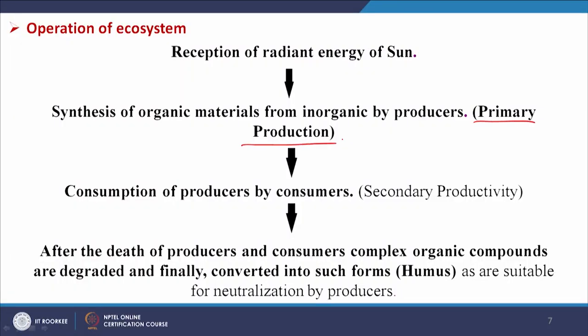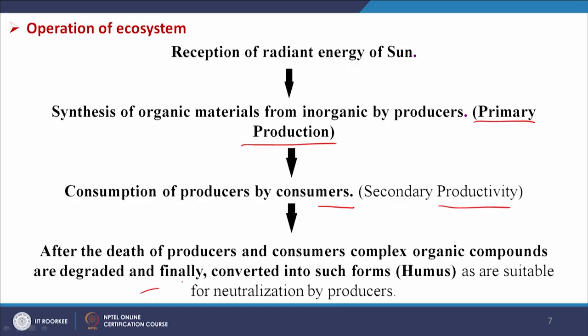How does the ecosystem operate? The energy comes from the sun and is taken up by the plants, which produce food — that is the primary production. Then consumption of producers by consumers is the secondary productivity, and we can get different types of consumers. After the death of producers and consumers, complex organic compounds are degraded and finally converted into elemental form, suitable for reutilization by the producers. This is the operation of the ecosystem.